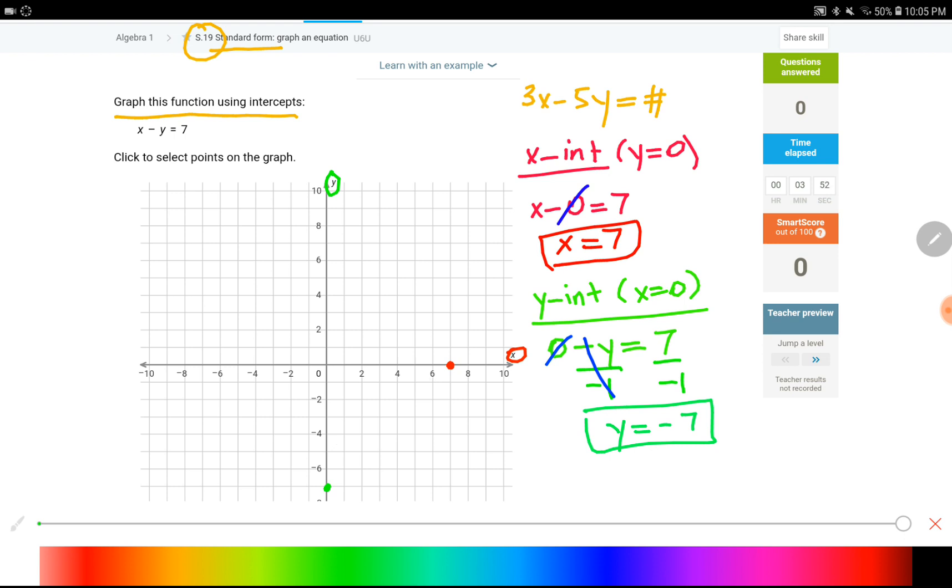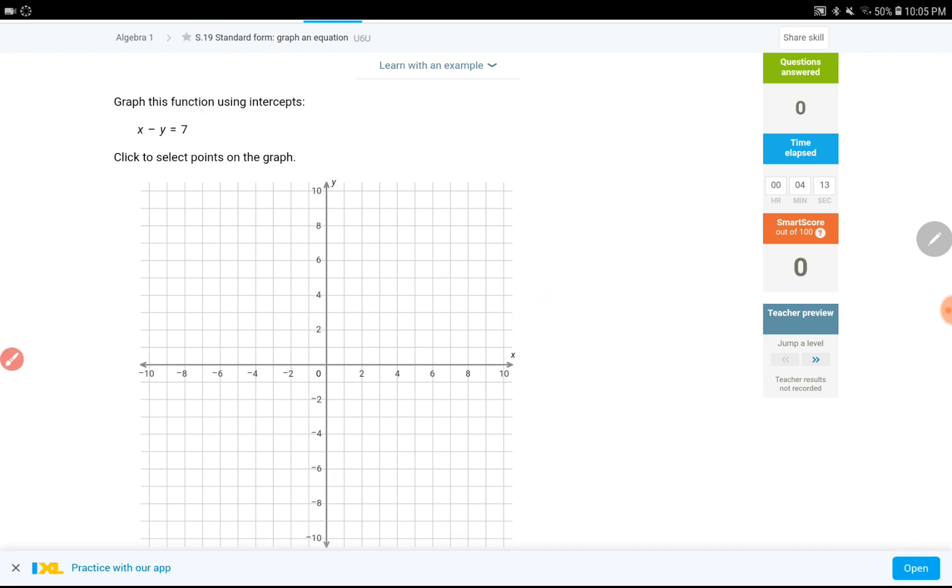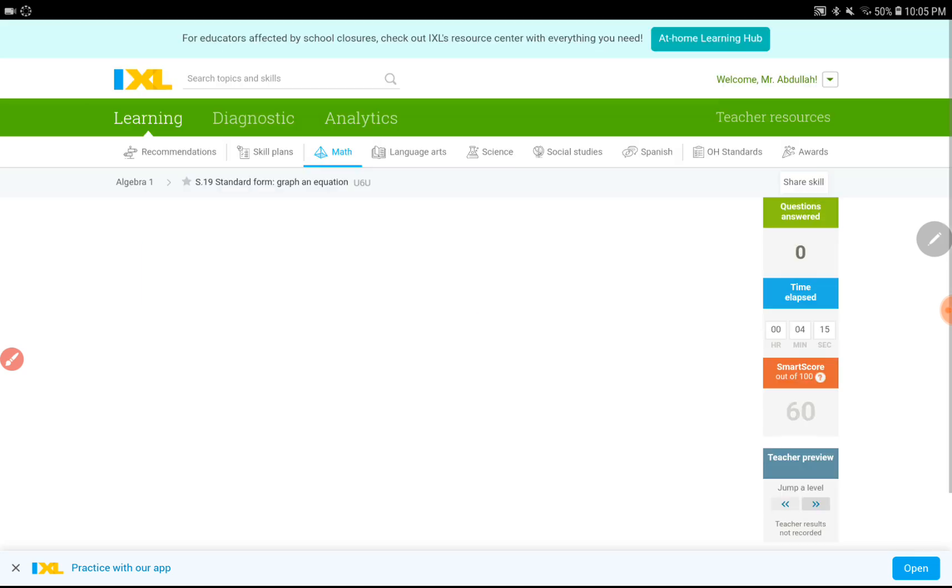Now once you plot these two points, IXL is automatically going to draw a solid line that passes through these two points. It's going to look definitely better than what I did. Once you put the two points, you will have the line automatically. Let's move on to the next level and see what kind of question that one is going to be.